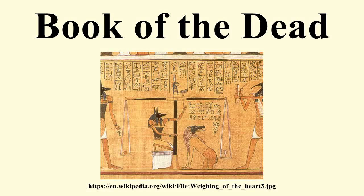The Book of the Dead is an ancient Egyptian funerary text used from the beginning of the New Kingdom to around 50 BCE. The original Egyptian name for the text, transliterated R.W.N.W.P.R.T.M.H.R.W., is translated as 'Book of Coming Forth by Day.' Another translation would be 'Book of Emerging Forth into the Light.' Book is the closest term to describe the loose collection of texts consisting of a number of magic spells intended to assist a dead person's journey through the Duat, or underworld.